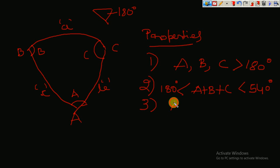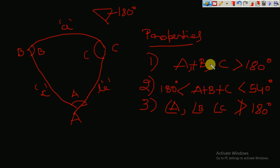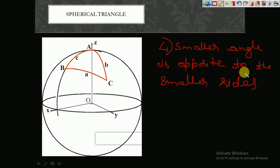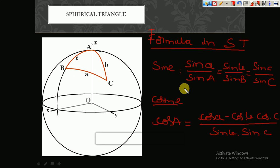The third property is that if I take a single angle — angle A, angle B, or angle C — it should not be more than 180 degrees. The fourth property is that a smaller angle is opposite to the smaller side. I'll show you here: if I take this as the smaller angle, it is opposite to the smallest side. If I take the largest angle, it has the largest side. The smallest angle is opposite to the smallest side.